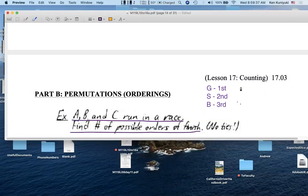Well, how many possibilities are there for the gold medal winner? The gold medal winner could be A, B, or C. There are three possibilities. Regardless of who comes in first and wins the gold, how many possibilities are there for second place? Well, regardless of who wins, there are two possibilities for second place.